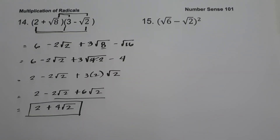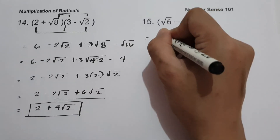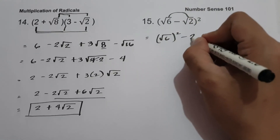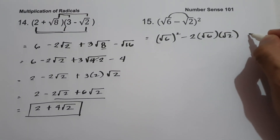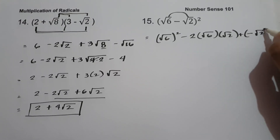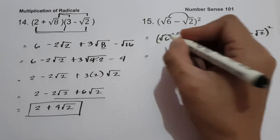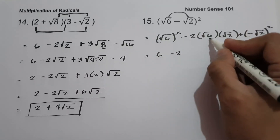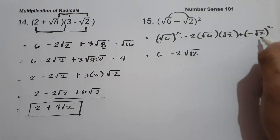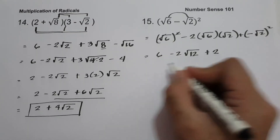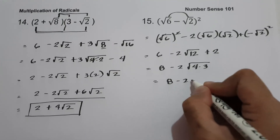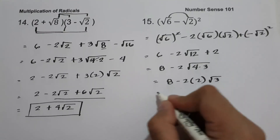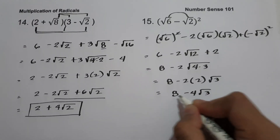On example number fifteen we have the quantity square root of 6 minus square root of 2 squared. We square the first term to get 6, multiply the first and second terms by 2 giving negative 2 square root of 12, and square the last term negative square root of 2 to get positive 2. So 6 plus 2 is 8, minus 2 square root of 12. Factoring 12 as 4 times 3: square root of 4 is 2, giving us 8 minus 4 square root of 3.